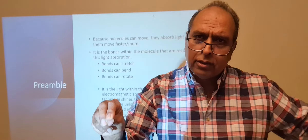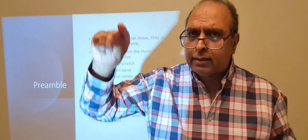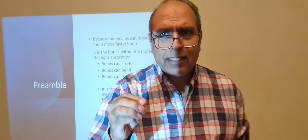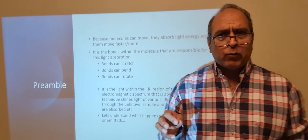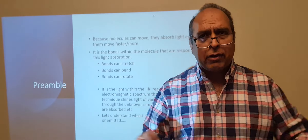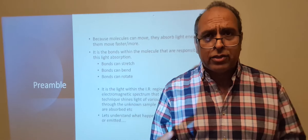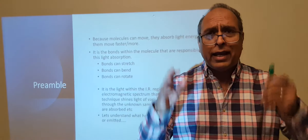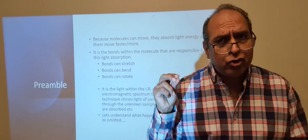The graph paper continuously moves across, and when the pen returns it looks like an inverted peak — it comes down and back up. That's the nature of infrared spectroscopy: the infrared frequency light is absorbed by bonds that are stretching, bending, or rotating, and having absorbed the light we see a drop in transmission.